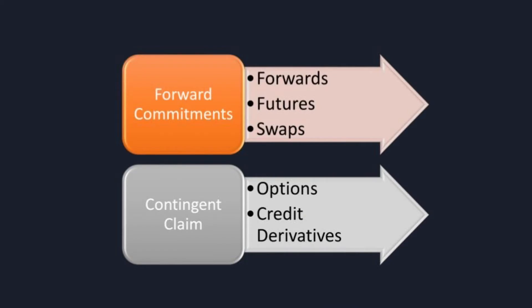Before we move ahead, let's understand the difference between a forward commitment and a contingent claim. Forwards, futures, and swaps are called forward commitments, which means there is a legal binding between two parties and they are obliged to keep the commitment they have made. Whereas a contingent claim is actually based on another event — if that event occurs, you use your right; otherwise, you won't. You will understand this more in detail when we study forwards, swaps, options, and credit derivatives in detail.